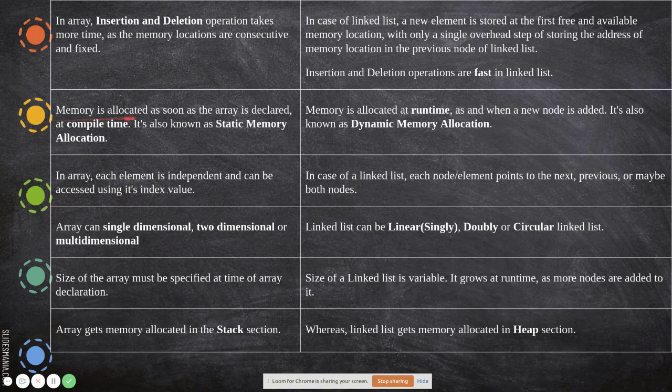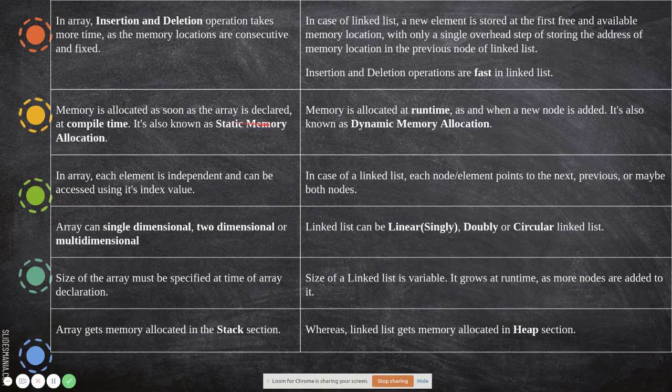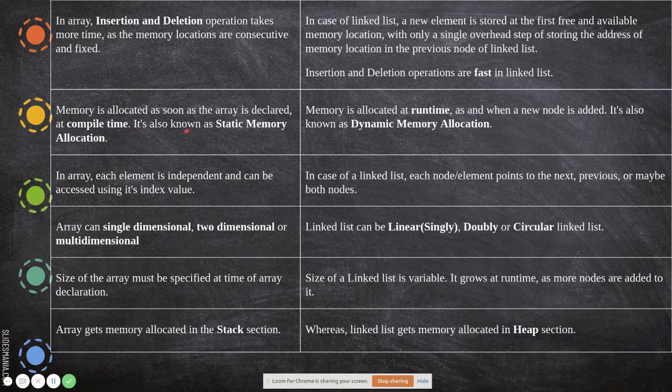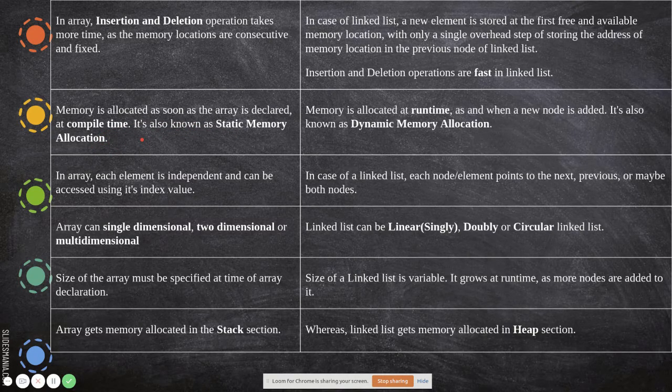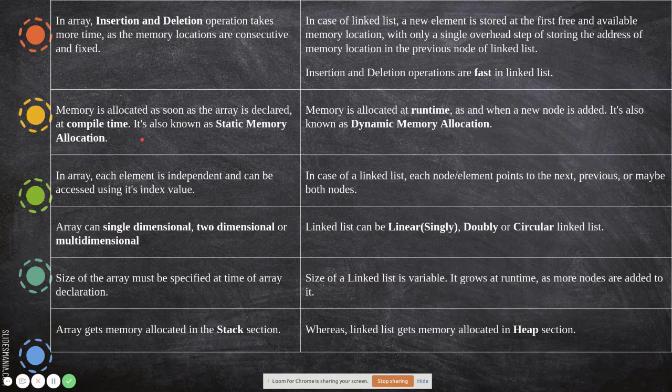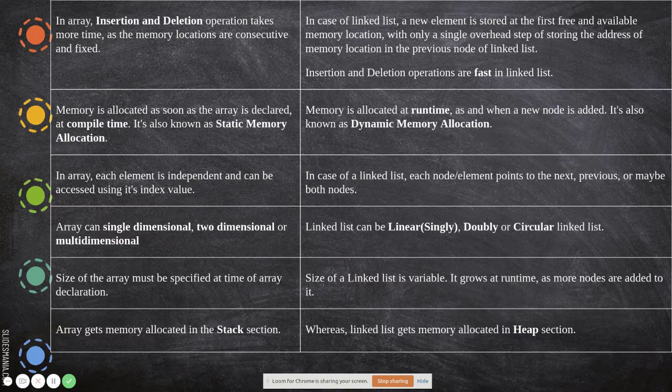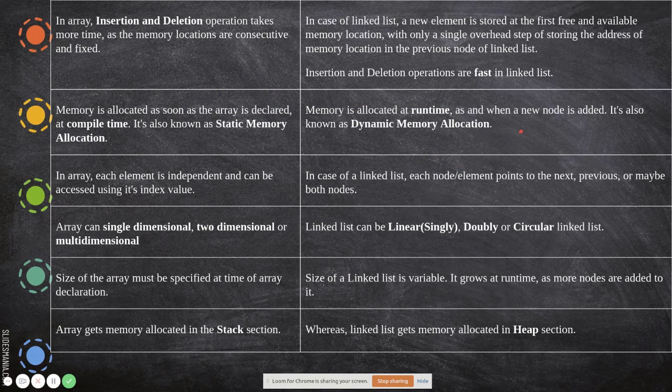Memory is allocated as soon as the array is declared at compile time. It is also known as static memory allocation. So during the declaration itself, the memory is allocated. First itself, you have to mention whether the array will have 10 values or 100 values, and so on. So it's a static memory.